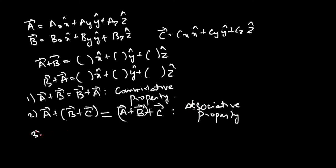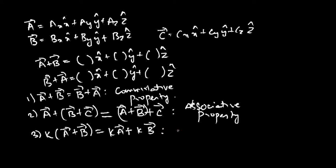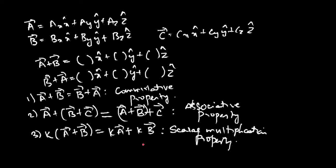If k is a scalar — a number like 2, 3, or 4 — what is k times (a_bar + b_bar) equal to? k·(a_bar + b_bar) equals k·a_bar + k·b_bar. This is the scalar multiplication property. We will soon see the distributive property: a_bar · (b_bar + c_bar) = a_bar · b_bar + a_bar · c_bar, or a_bar × (b_bar + c_bar) = a_bar × b_bar + a_bar × c_bar. That is the distributive property.